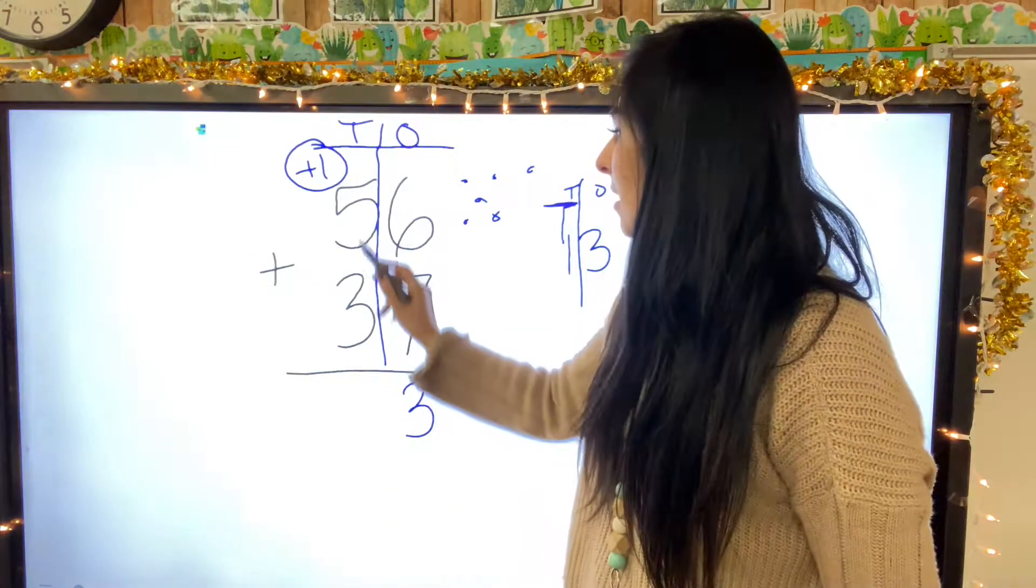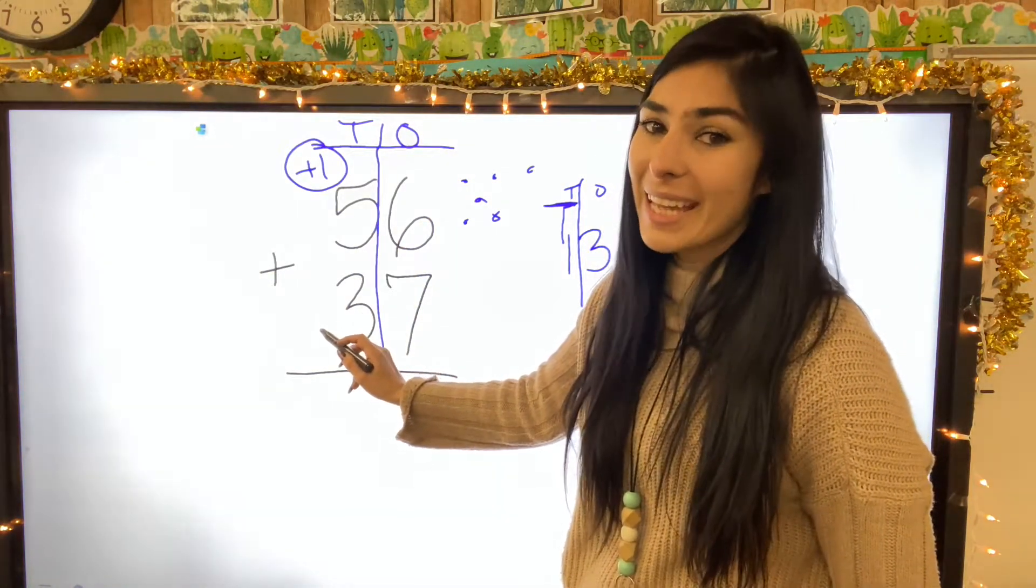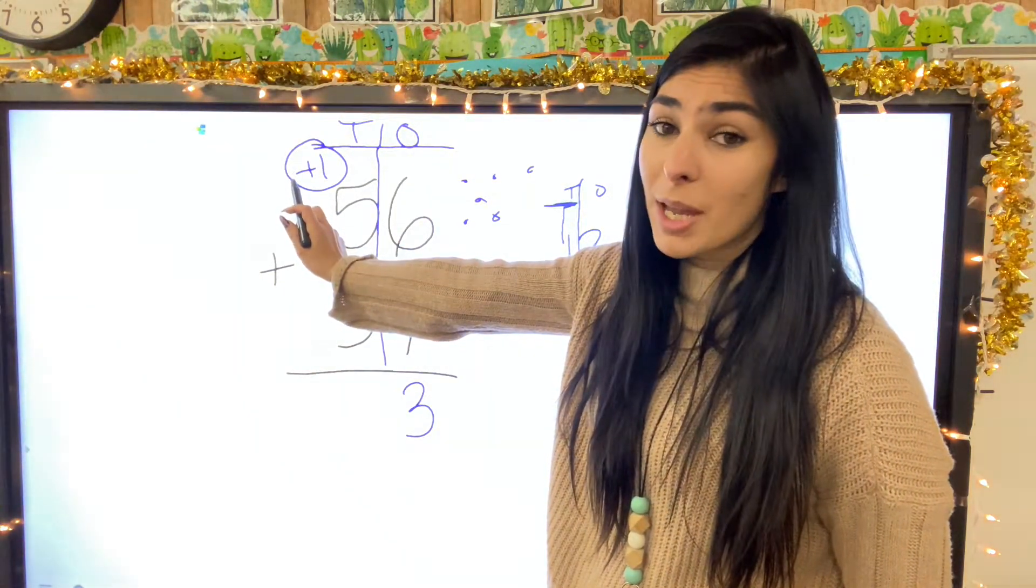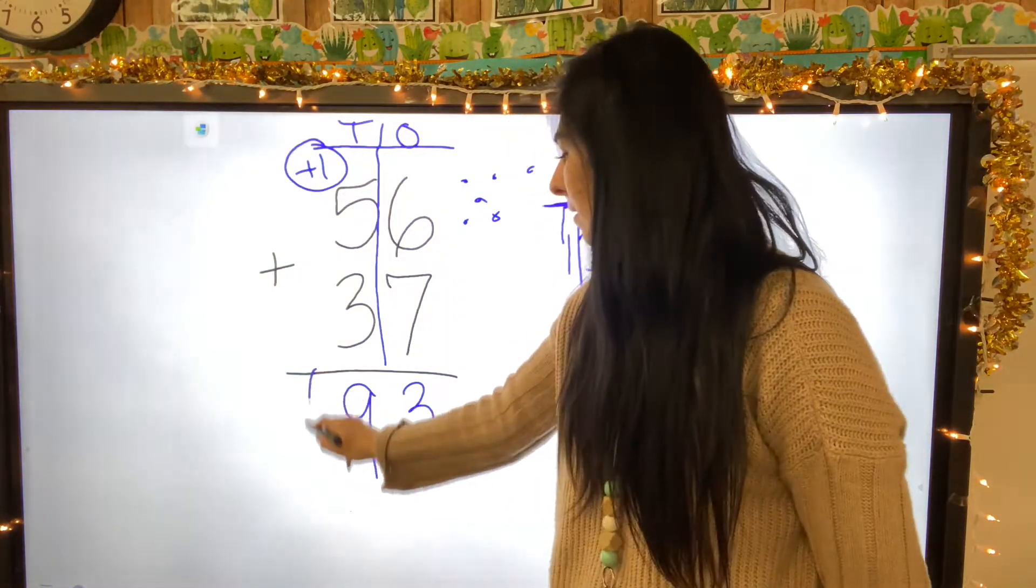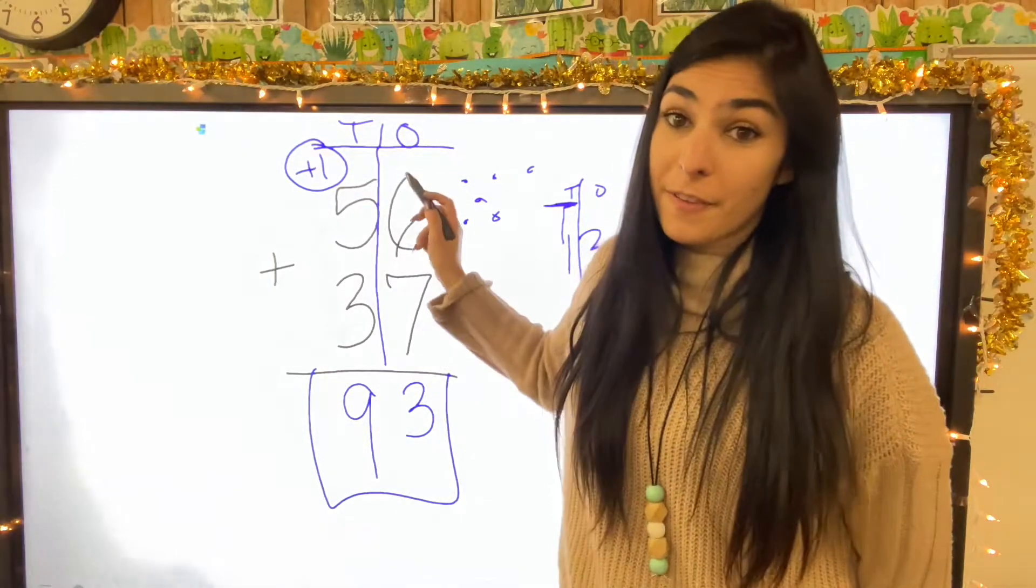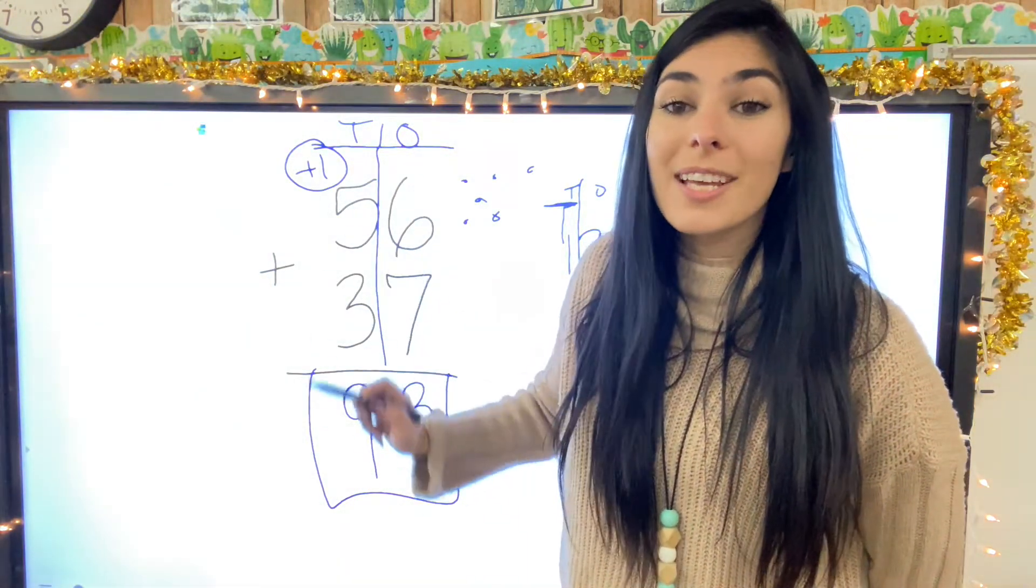So now that we've done that, let's go ahead and count up our tens. Five plus three? Eight. But don't forget that plus one. So eight plus one equals nine. So 56 plus 37 equals 93.